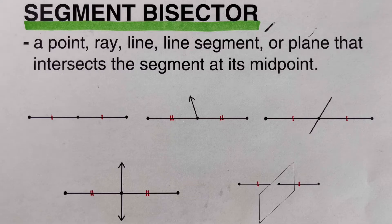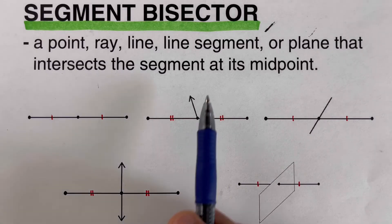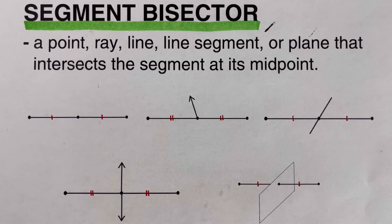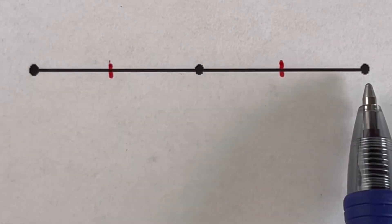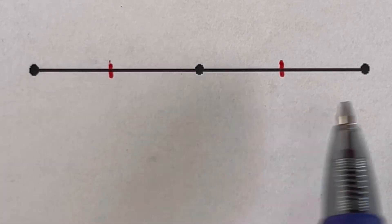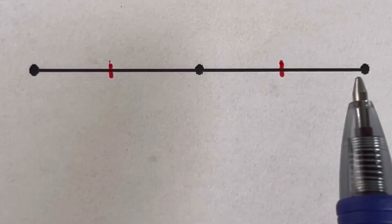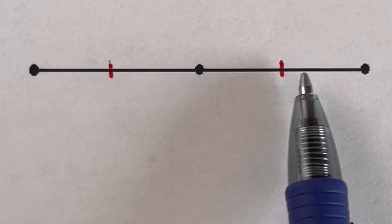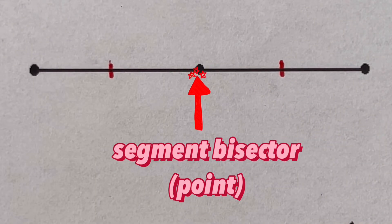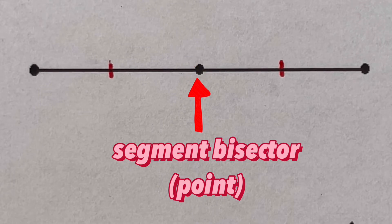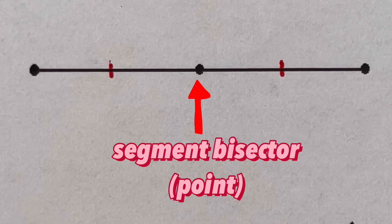A segment bisector intersects the segment at its midpoint. Looking at the first picture, this segment has a first endpoint and a second endpoint. It was cut into two equal pieces by a point, so we can say that this point is the segment bisector for this line segment.